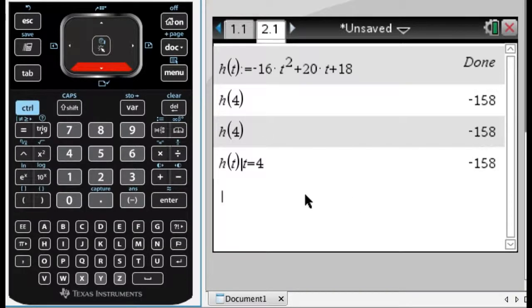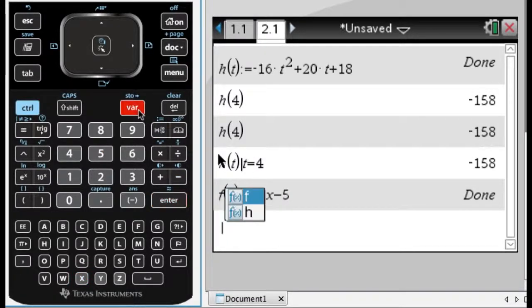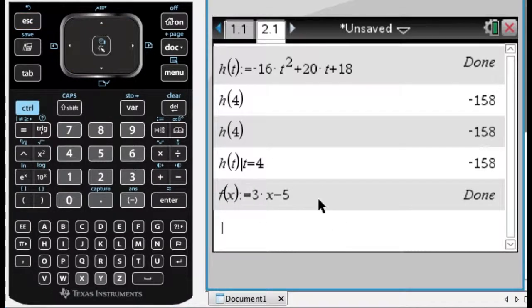So just to kind of show what the var key is doing for you, if I define another function. Let's say, let's go with 3x minus 5. Now when I press the var key, I get both functions and I get to pick between them. So these are kind of the basic calculator things that you need to know how to do with a function. They'll speed your life up a little bit when you're doing math. And that's probably a good thing. So I hope you found this helpful and good luck.